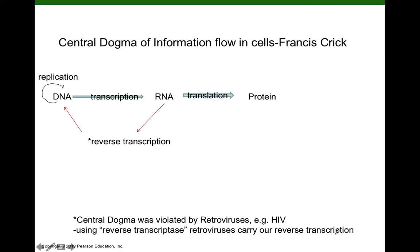So always, always, we're remembering the central dogma of information flow in cells as described by Francis Crick. We talked about DNA replication, where DNA acts as a template to make a DNA copy — required to copy the chromosome before the cell divides — and we're using bacteria as our model organisms. Then we talked about gene expression and structural genes, genes that encode information for proteins. In gene expression there are two steps: the first step, transcription, is when DNA acts as a template to make RNA; and then in the second step, called translation, mRNA acts as a template to make a protein.